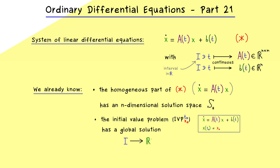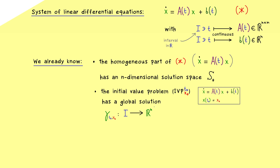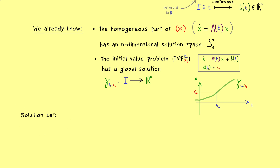Obviously the codomain has to be ℝⁿ. We need a good name for this unique solution — let's call it γ with two indices, t₀ and x₀, as a reminder that we have chosen this initial value problem for our global solution. We can visualize that in the t-x plane: here we have t₀ and x₀, and our unique solution γ goes through this point. The idea is to use this one solution to get all solutions together — the whole solution set of our system of linear ODEs, which we simply call S.